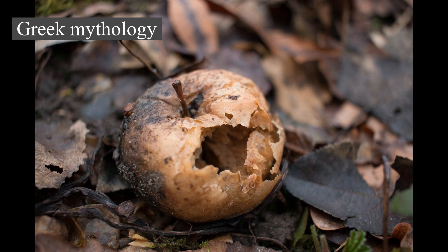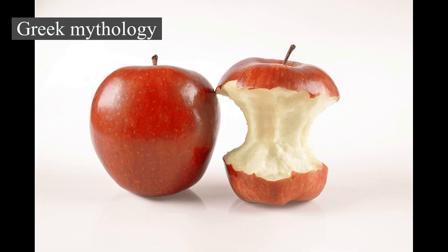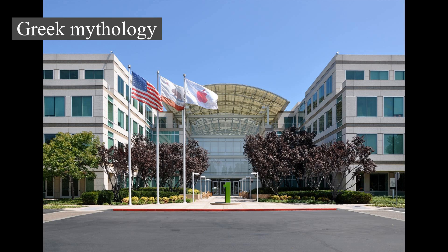Three goddesses claimed the apple: Hera, Athena, and Aphrodite. Paris of Troy was appointed to select the recipient. After being bribed by both Hera and Athena, Aphrodite tempted him with the most beautiful woman in the world, Helen of Sparta. He awarded the apple to Aphrodite, thus indirectly causing the Trojan War. The apple was thus considered, in ancient Greece, sacred to Aphrodite. To throw an apple at someone was to symbolically declare one's love, and similarly, to catch it was to symbolically show one's acceptance of that love. An epigram claiming authorship by Plato states: 'I throw the apple at you, and if you are willing to love me, take it and share your girlhood with me. But if your thoughts are what I pray they are not, even then take it, and consider how short-lived is beauty.'